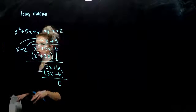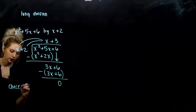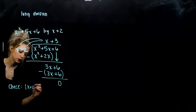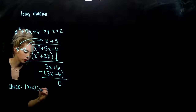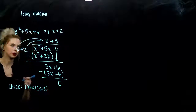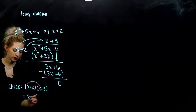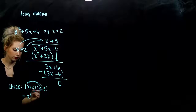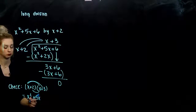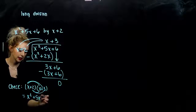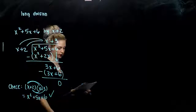We can always check with multiplication. If I take x plus 2 — what I was dividing by — and multiply it by what I got out, do we really get the thing we started with? First: x squared. Outer 3x and inner 2x will give me 5x altogether. And last, plus 6. So yes, we did the division correctly.